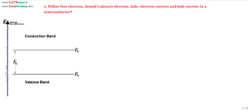First we will look into the energy band diagram of a semiconductor, where the energies are plotted on the y-axis. These are called energy levels. Energy levels are discrete in nature, indicated with lines, and no two electrons can occupy the same energy level.